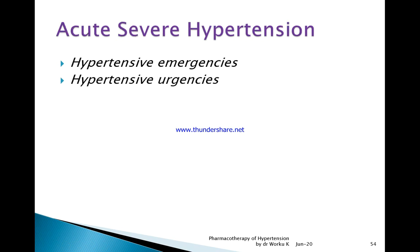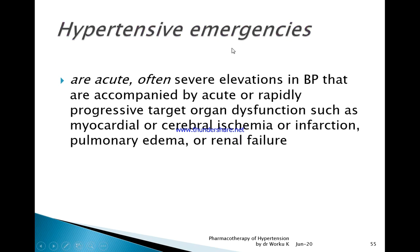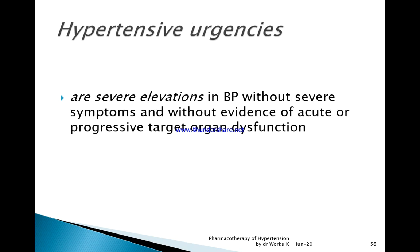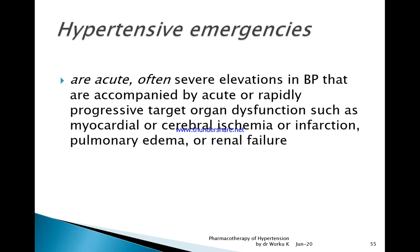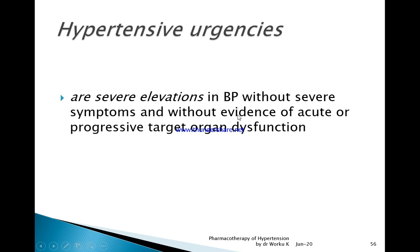There are two severe forms of hypertension: hypertensive emergencies and hypertensive urgencies. Hypertensive emergency is severe elevation in blood pressure accompanied by end-organ damage. Hypertensive urgency is severe elevation in blood pressure in the absence of end-organ damage. Management differs: in emergency there is organ damage such as ischemia, papilledema, or renal failure; in urgency there is severely elevated blood pressure but no end-organ damage.